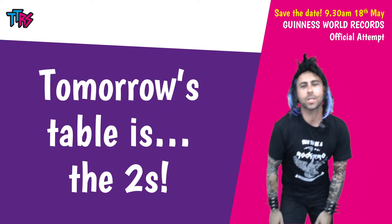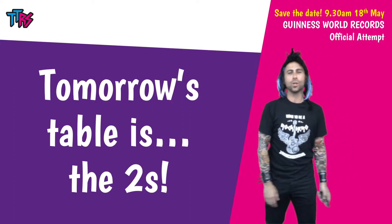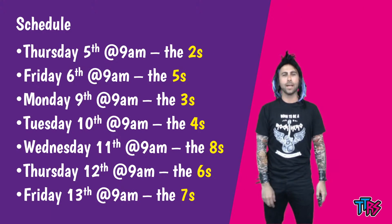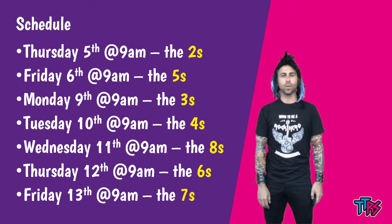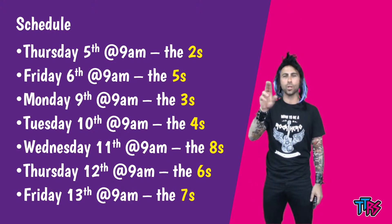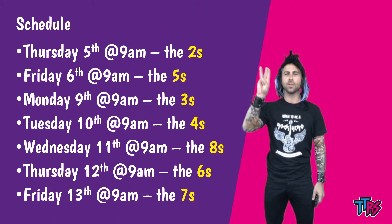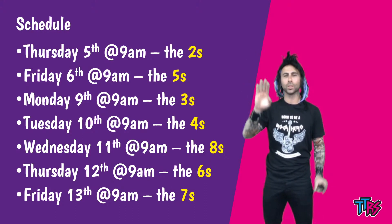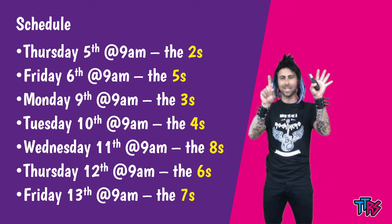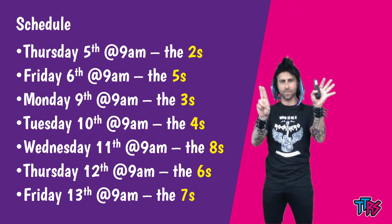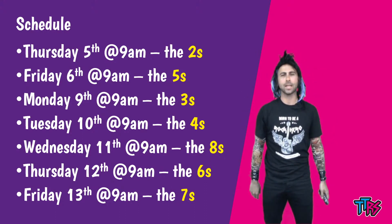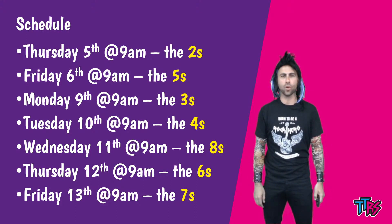Let's talk about tomorrow's table, which is the twos, and the schedule up until next Friday. So we've got the twos, then the fives, then the threes, then the fours, then the eights, then the sixes, and then the sevens. That takes us up to next Friday.